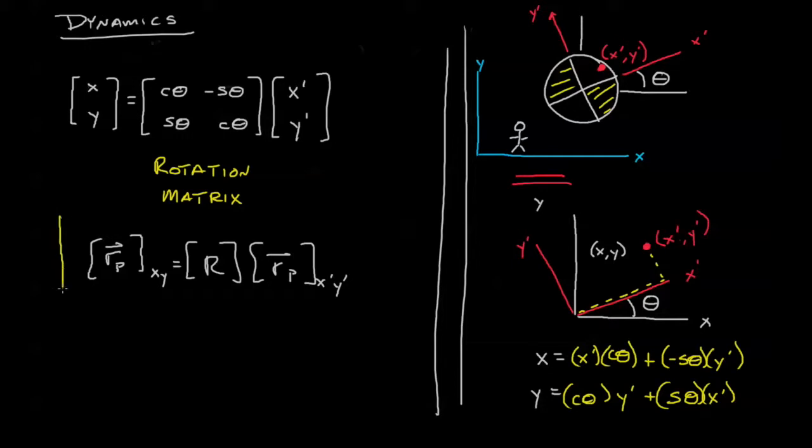So remember that by using our rotation matrix we can transform our x prime, y prime coordinates into x and y coordinates. Another way to see that is to pretend that we're looking at these gray axes and we can define the x prime, y prime in terms of that axis. Now all we need to do is identify the difference between that axis and the teal axis.